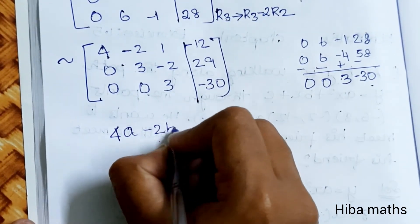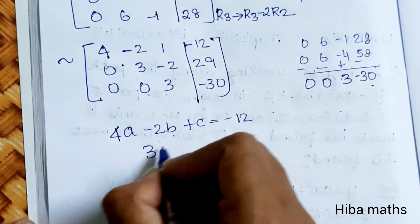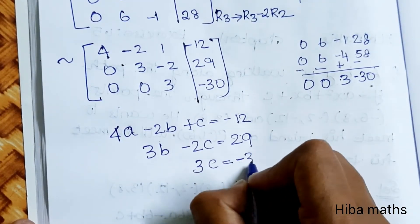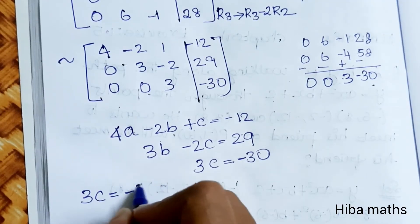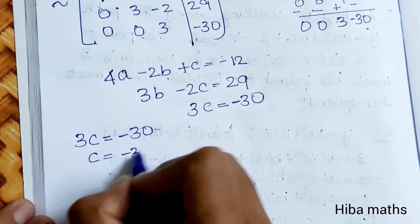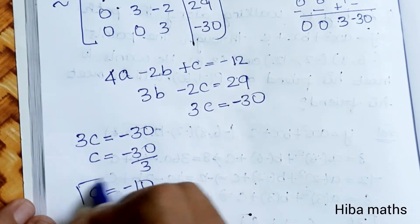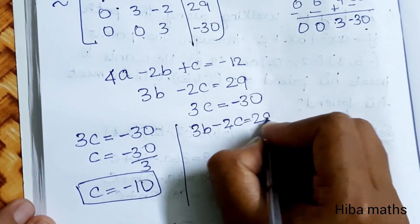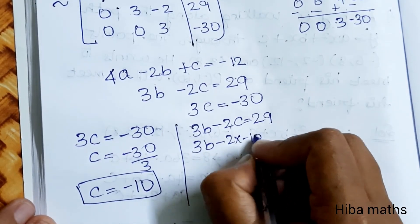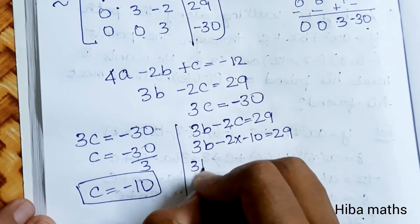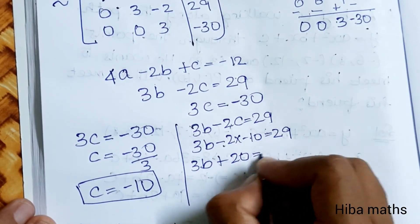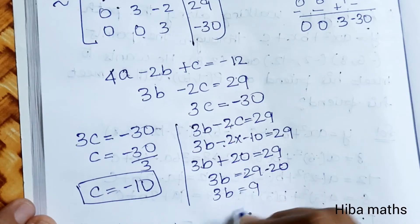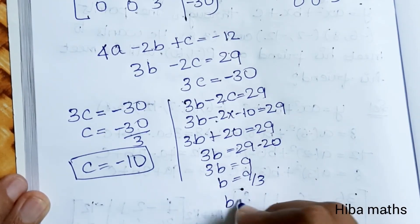From the equations: 4a - 2b + c = -12, 3b - 2c = 29, and 3c = -30. Solving for c first: c = -30/3 = -10. Substituting into 3b - 2c = 29: 3b - 2(-10) = 29, so 3b + 20 = 29, 3b = 9, b = 3.